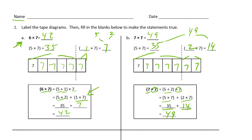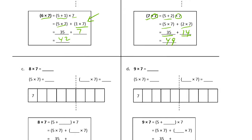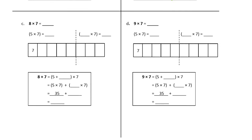Now if you already know seven times seven so well that you just know it — like you know your name — you don't have to do all this. But the point is you're also practicing using the distributive property, so that later on when you have to multiply numbers like 37 times 49, you can actually do that in your head. We're starting with more manageable numbers to build this skill, then we can use it to solve more difficult problems.